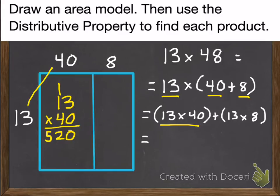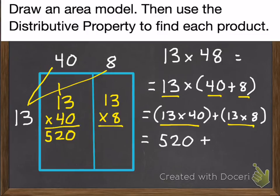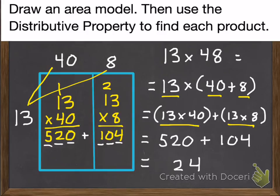So 13 times 8. We start with 8 times 3, which is 24. Then 8 times 1, which is 8 plus 2, equals 10. So we get 104. And we add those together. We have 4 1s, 2 10s, and 6 100s. So we get 624.